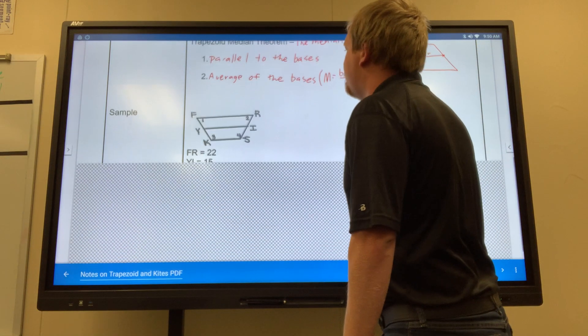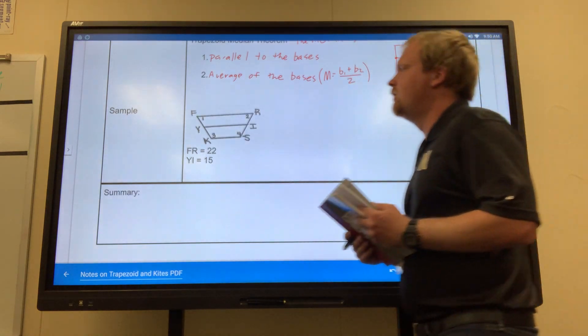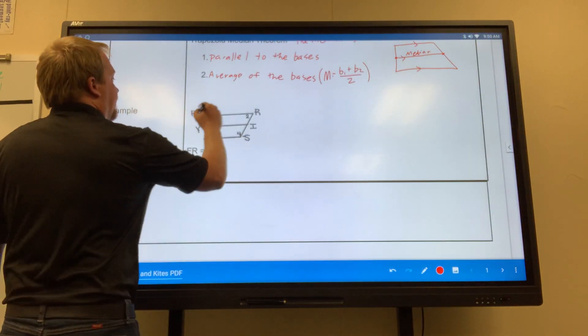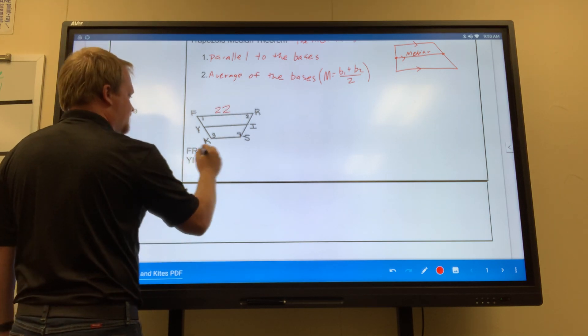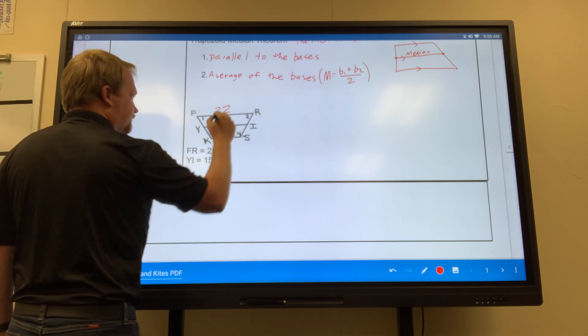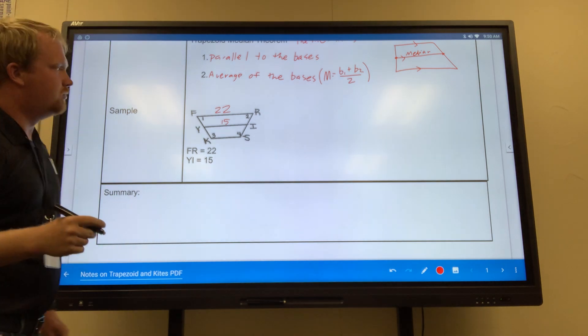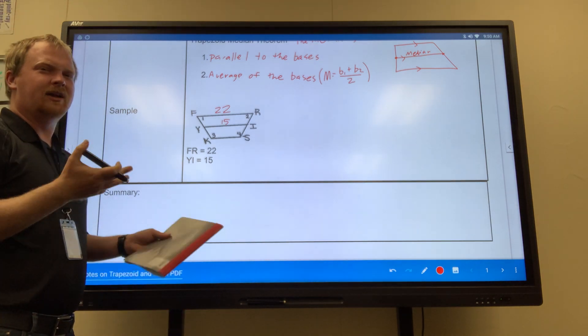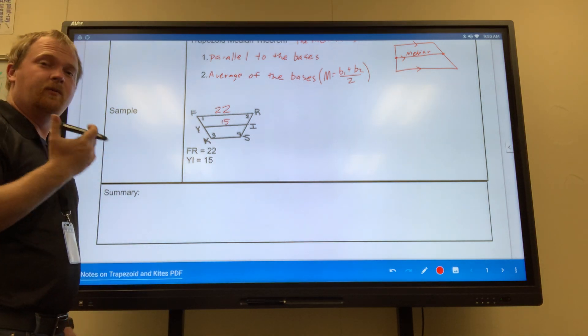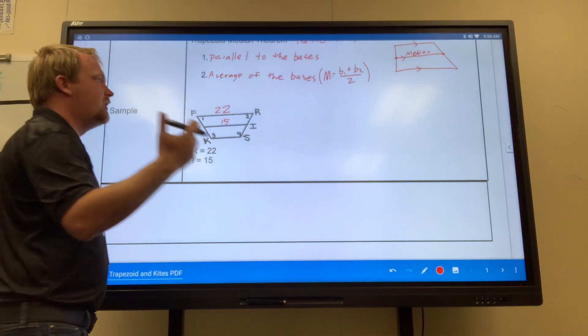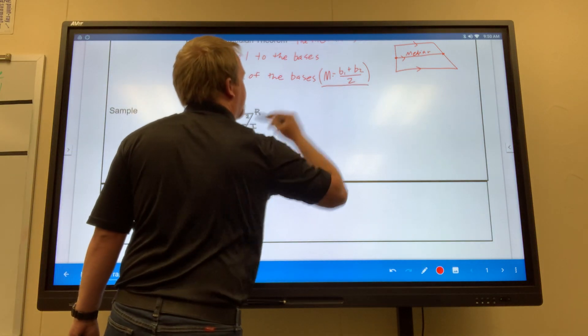Because looking at this sample right here, I have FR, which is one of my bases at 22, and my median is 15. Well, I already got the median, but I'm missing a second base. But I can still find that second base if I use this right here.